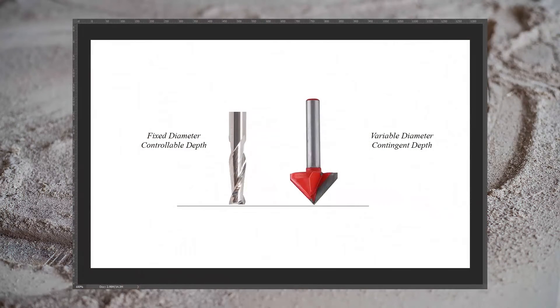On the left we have a traditional end mill. It has a fixed diameter, meaning that at any point along its cutting surface the diameter is the same as every other point. This consistency of the cutting diameter means that we can move the end mill to any arbitrary depth in the wood and get the same result.